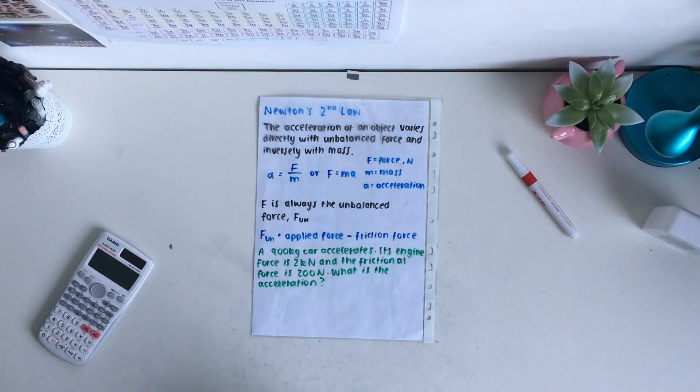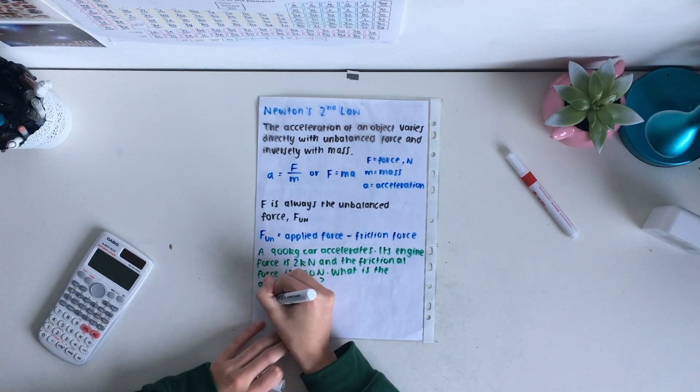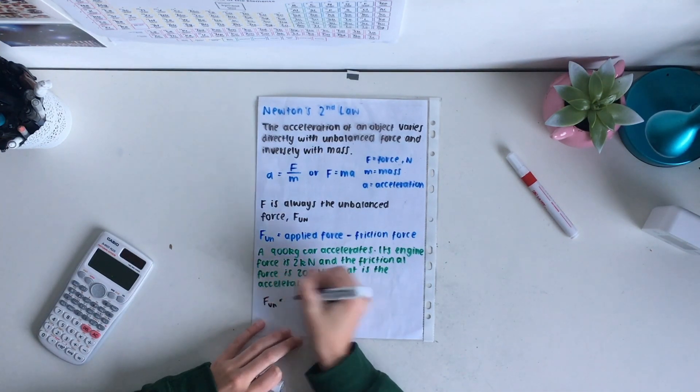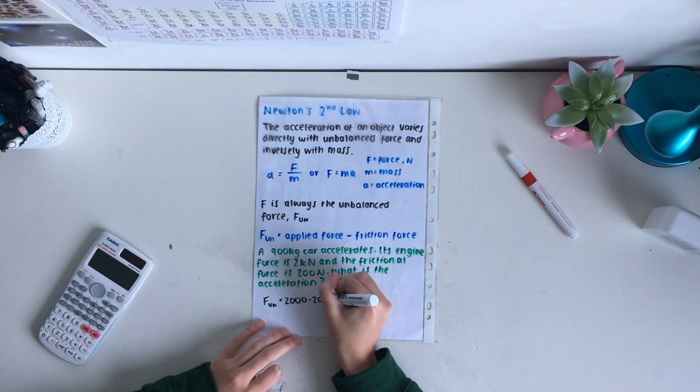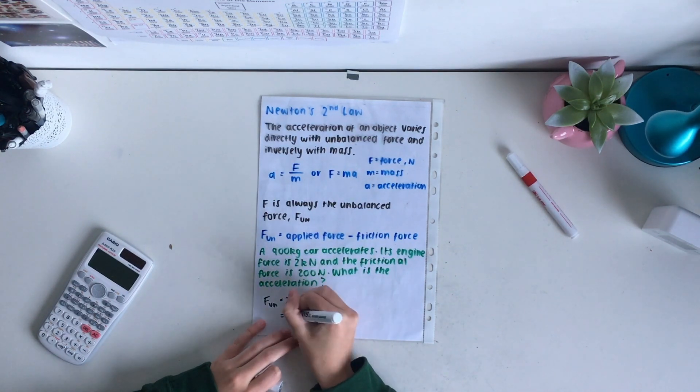First, we need to find our unbalanced force, F_un. Our applied force is 2000 newtons and our frictional force is 200 newtons. This means that our unbalanced force is 1800 newtons.